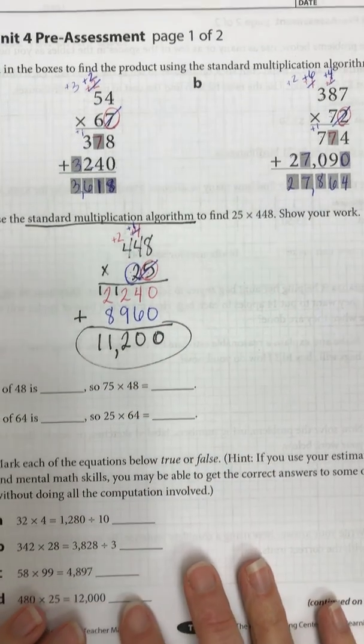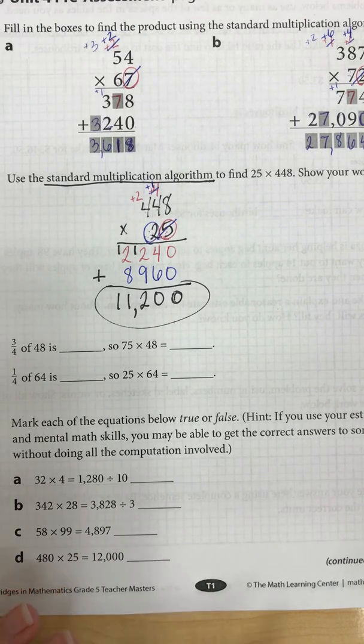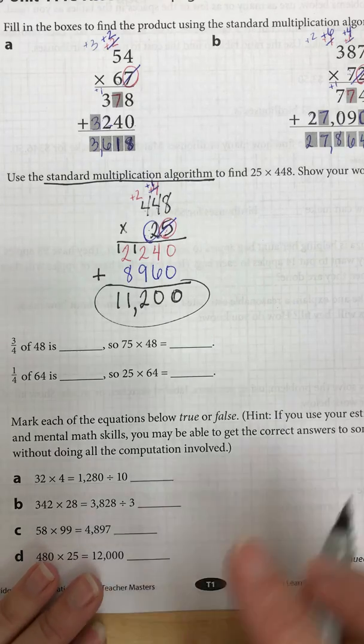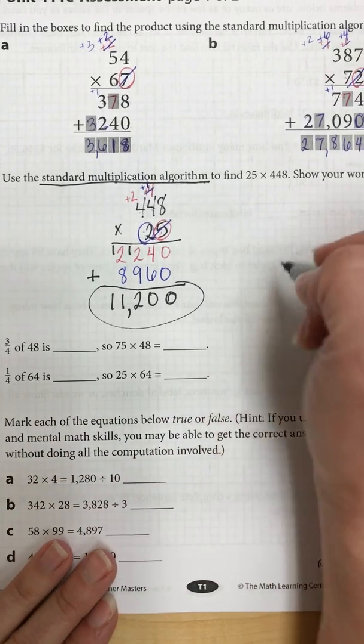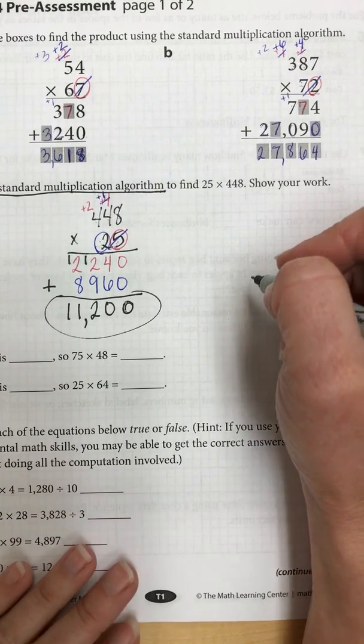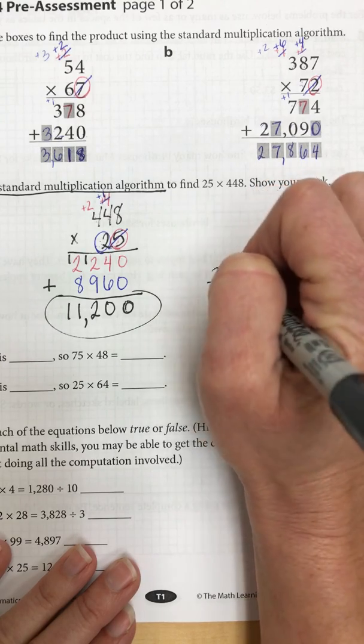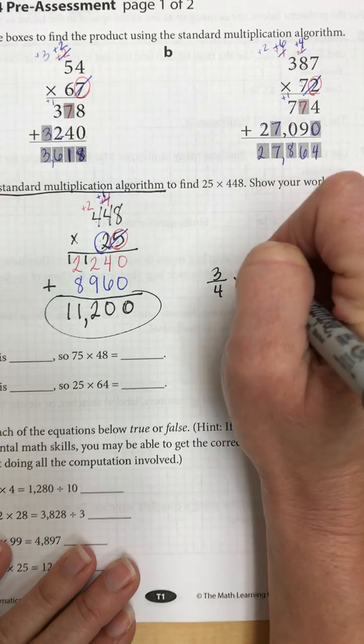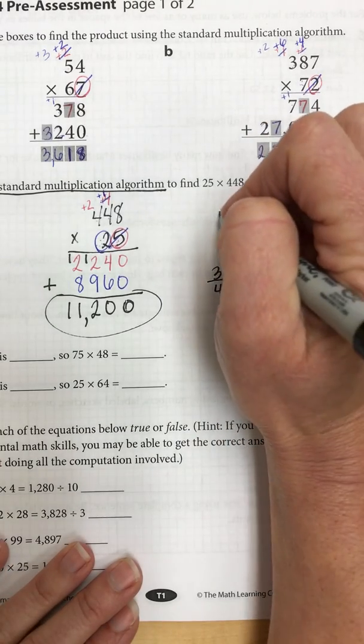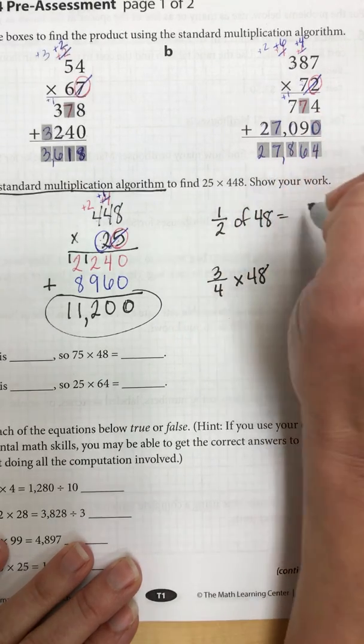Okay, on to the next part. We have fractions. 3 fourths of 48 is, so 75 times 48 equals. Okay, so I'm going to do this over here on my extra space of paper. 3 fourths of 48 is the same thing as saying 3 fourths times 48. I know I'm going to break this down a little easier. I know that one half of 48 equals 24.